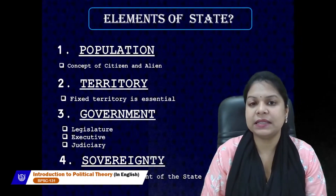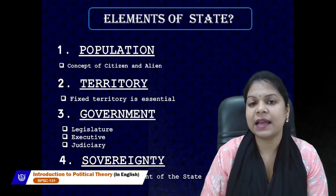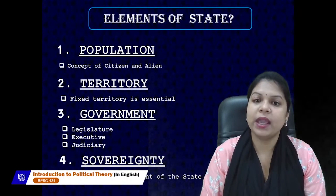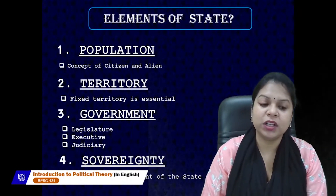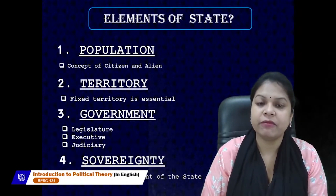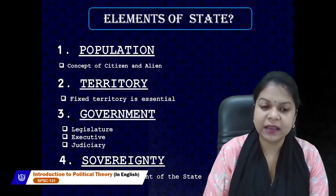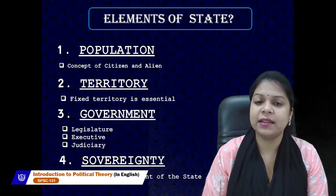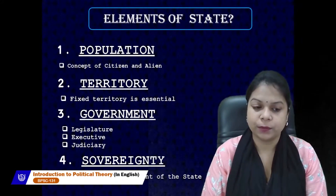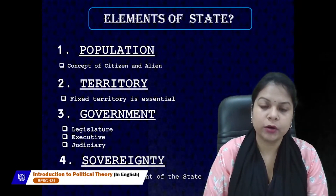The third organ of government is the judiciary, which is the custodian of the constitution. The judiciary ensures that whatever policies and rules are formulated by the legislature do not go against the constitution. All laws and policies must be according to the constitution, and whenever a policy goes against it, the judiciary has the right to object. The judiciary ensures that everything done in the country is according to the constitution.